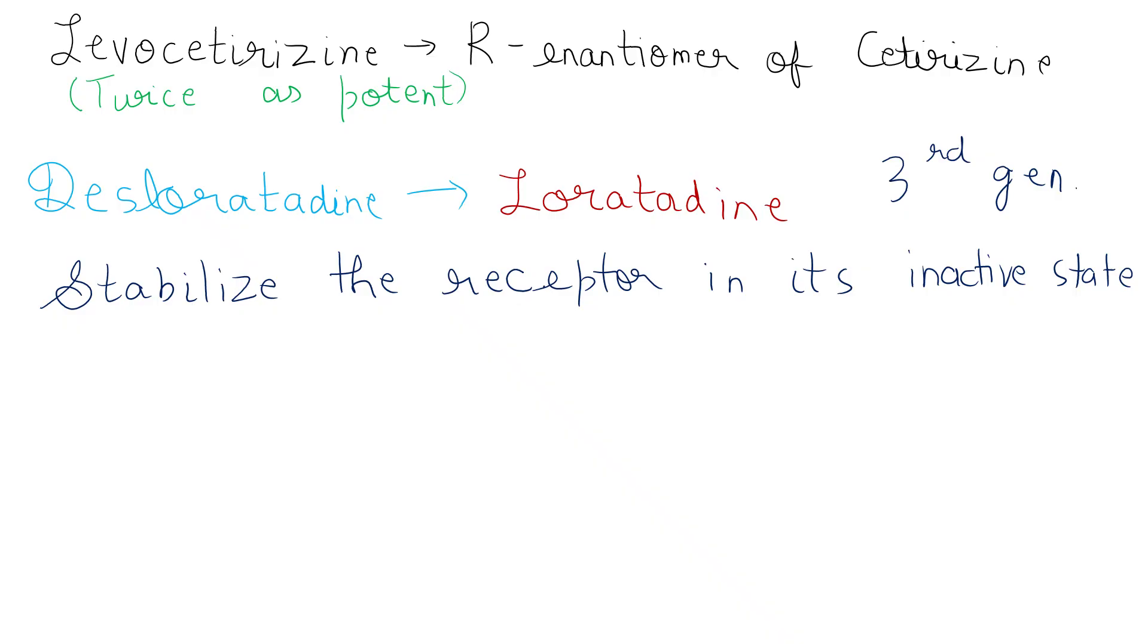Now talking about the pharmacokinetics of each drug. The crucial differences which appear on your exams: first of all is the onset of action. This is extremely important. Levocetirazine works within one hour, whereas desloratidine takes one to three hours.